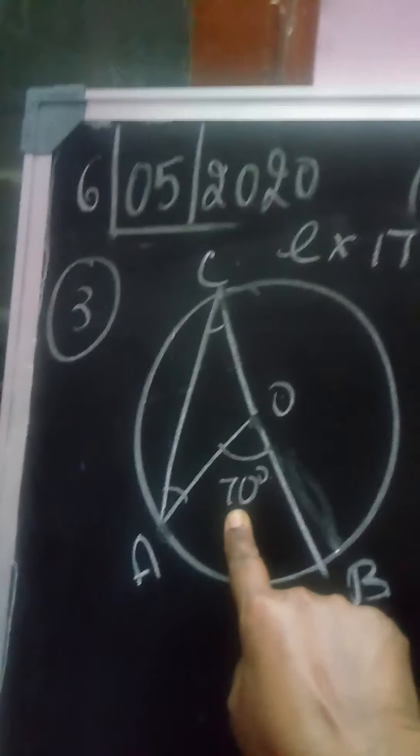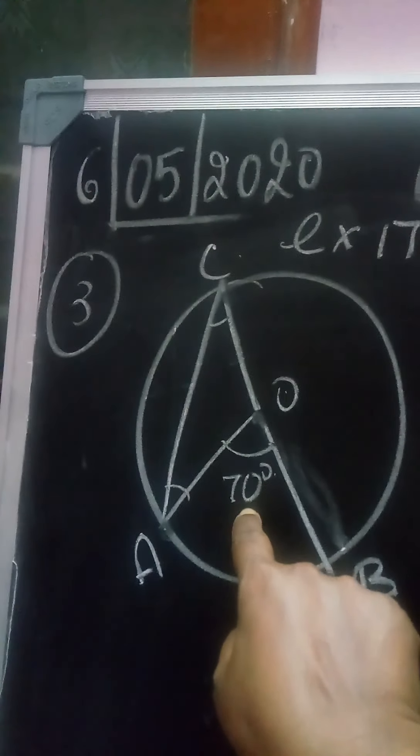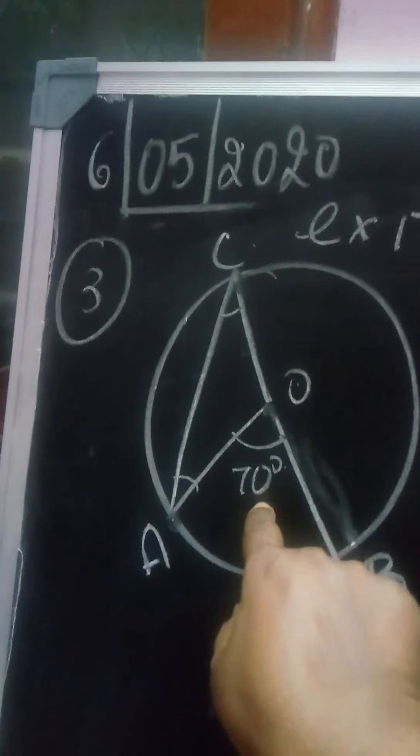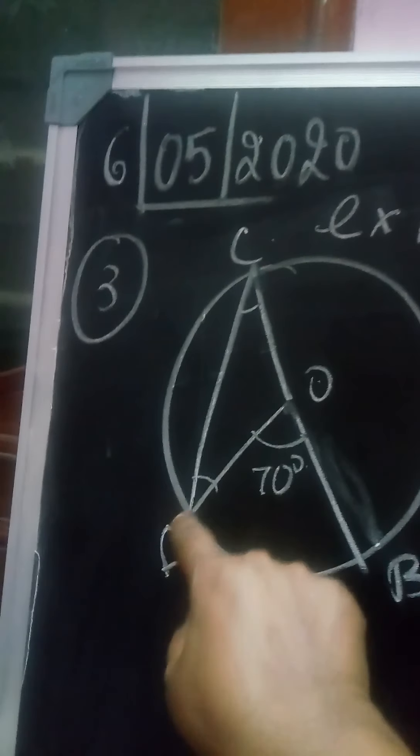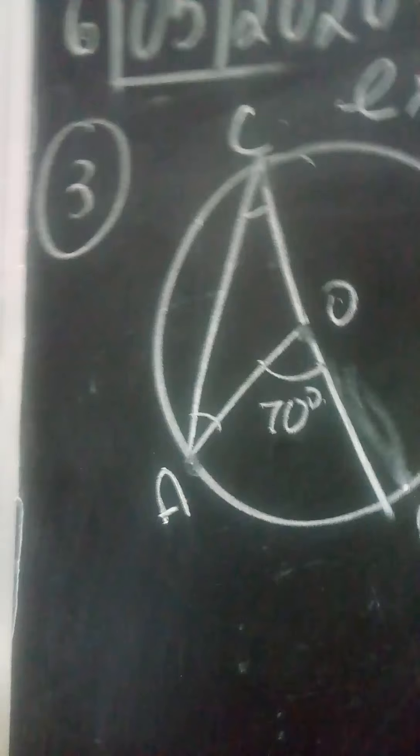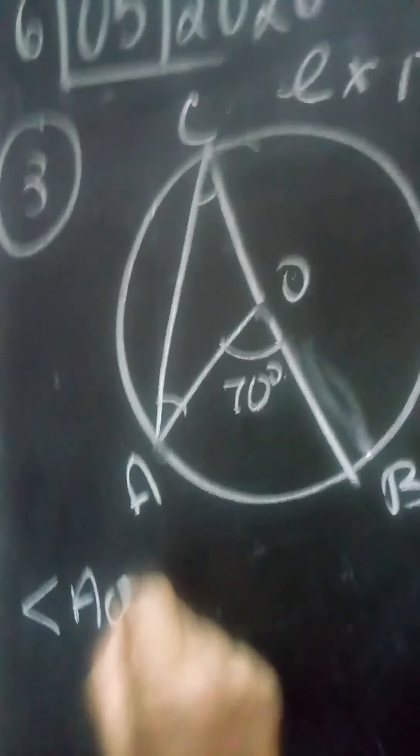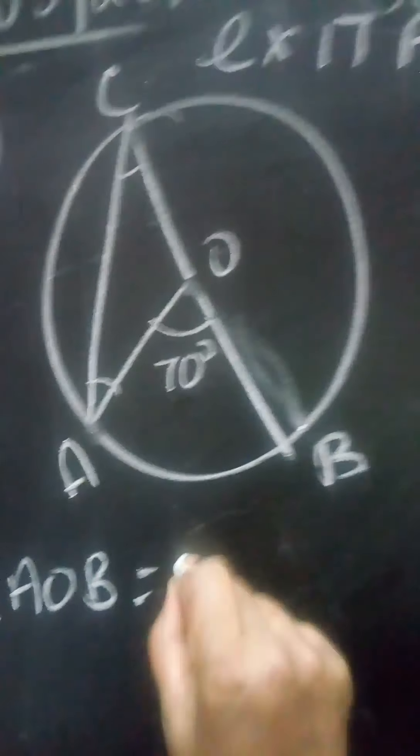This is double that angle. What we need to do is find out angle ACB first, or ACO. Now angle AOB is equal to two...